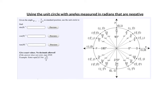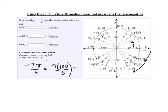Last example: negative 7 pi over 6. You can convert to degrees — pi radians is 180 degrees, so negative 7 times 180 divided by 6 gives the angle in degrees. But I'm just going to count in pi over 6's. Pi over 6 is 30 degrees right there, but this time I'm going the negative direction. So: negative 1 pi over 6, negative 2 pi over 6, negative 3 pi over 6, negative 4 pi over 6, negative 5 pi over 6, negative 6 pi over 6, negative 7 pi over 6 — I'm ending up right here, and the point I'm looking at is right there.